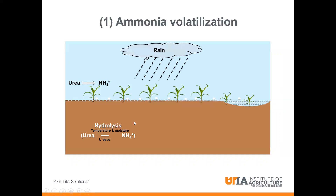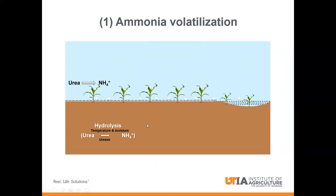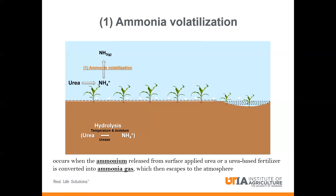When there is rainfall, that ammonium is incorporated into the soil, so that nitrogen is fairly stable. However, rainfall cannot always be predicted or may not fall when needed by the grower. In that case, that ammonium can be converted to ammonia gas, which escapes to the atmosphere. In a nutshell, ammonia volatilization occurs when ammonium released from surface-applied urea-based fertilizer is converted into ammonia gas that escapes to the atmosphere.